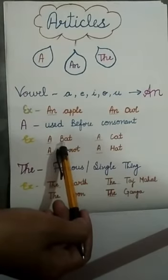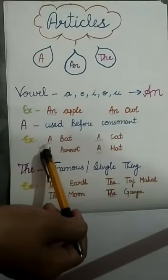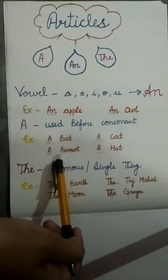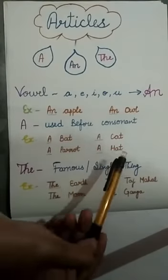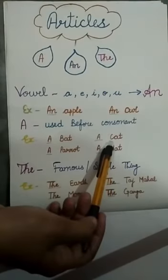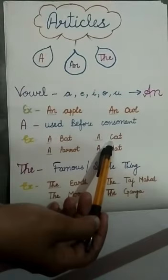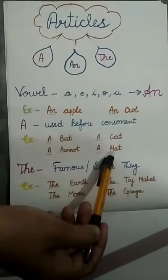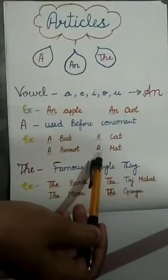Bat, if you see, B is a consonant, so we use A. Parrot, P is a consonant, so we use A. Cat, if you see first, C is a consonant, so we use A. Hat, H is a consonant, so we use A.